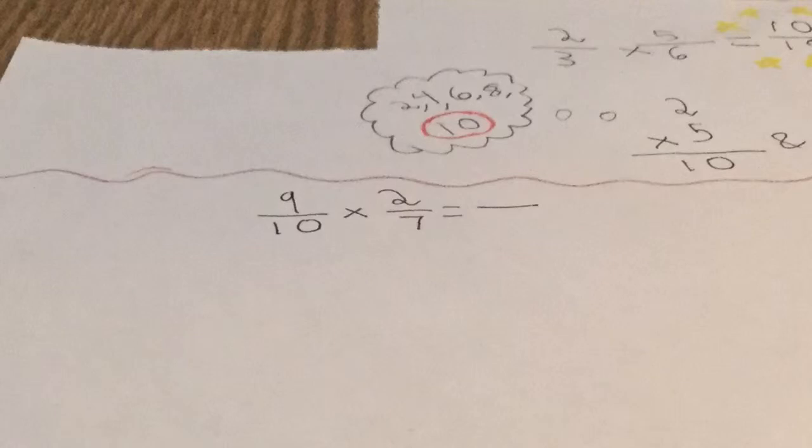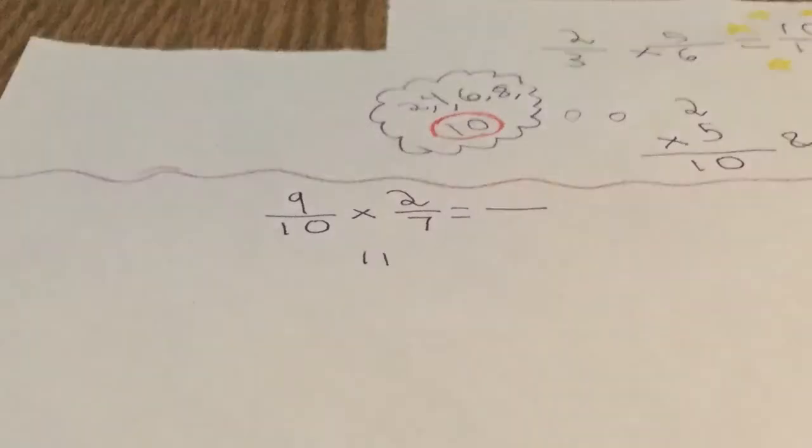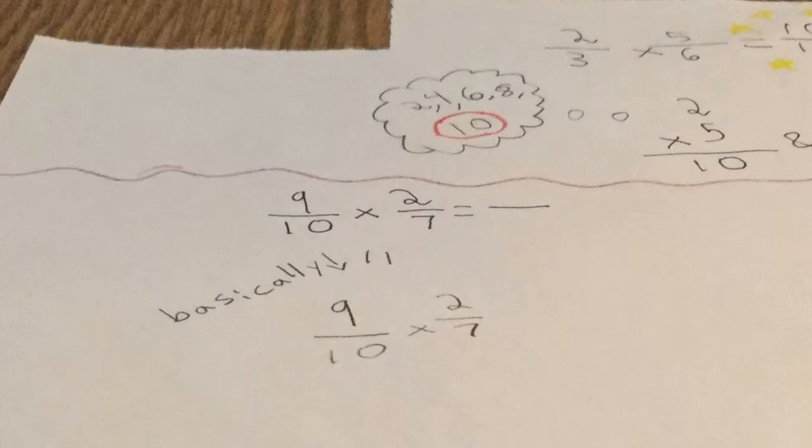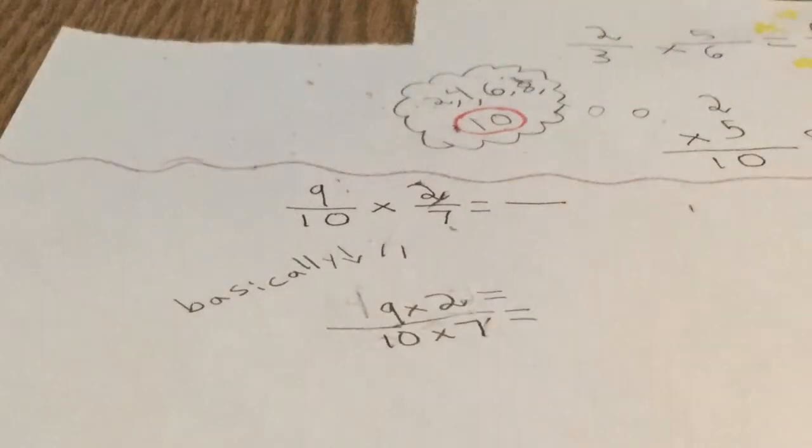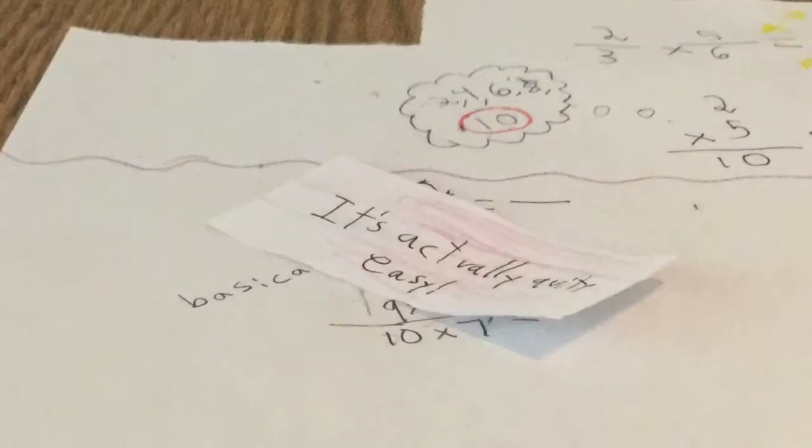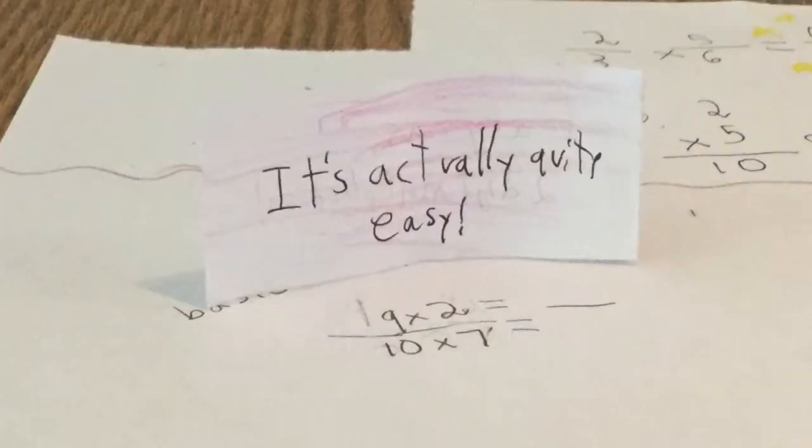So it is nine-tenths times two-sevenths equals blank. It's basically like just saying nine times two, ten times seven equals. It's like a block game. Look at the answer, top and bottom. It's actually quite easy now that you think about it. So, let us start.